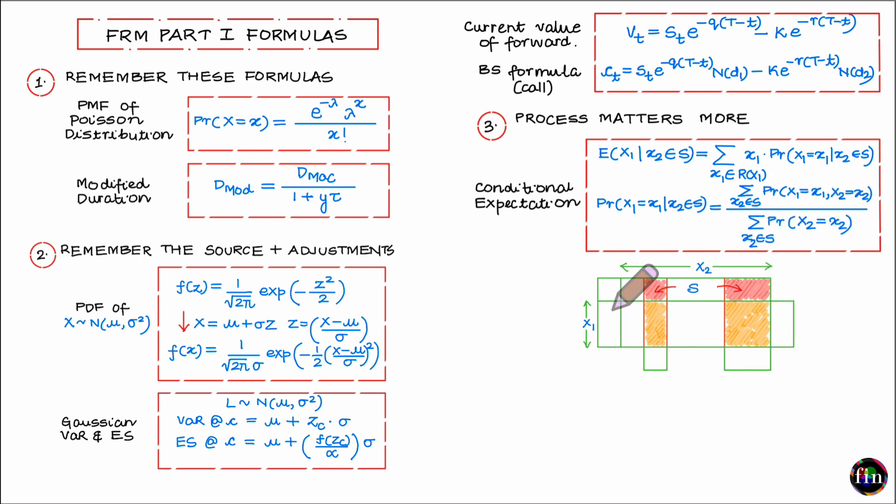Then for each of these rows sum up the entries in the orange shaded region and fill out this column. Conditional expectation is very simply the sum product of this column and this column divided by the total of this shaded region. And that is what this formula is trying to achieve. See if I were to remember the process it is much simpler as compared to remembering this formula. So this is my camp 3: those formulas for which forget about the formula, remember the process.